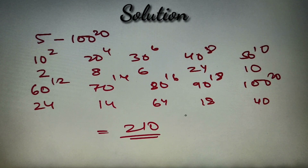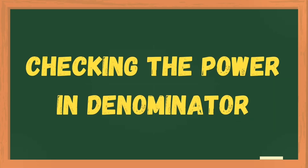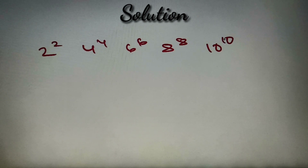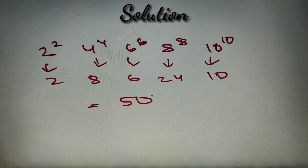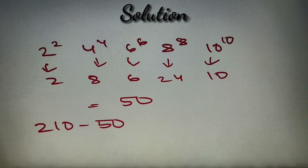Now let's calculate the highest power of 2 in the denominator and subtract to find the number of trailing zeros. The powers of 2 in the denominator come from: 2 raised to power 2, 4 raised to power 4, 6 raised to power 6, 8 raised to power 8, and 10 raised to power 10. From 2 raised to power 2 we get 2 powers of 2; from 4 raised to power 4 we get 8; from 6 raised to power 6 we get 6; from 8 raised to power 8 we get 24 (since 8 equals 2 cubed); and from 10 raised to power 10 we get 10. Summing: 2 plus 8 plus 6 plus 24 plus 10 equals 50. So the denominator has 50 powers of 2, and the numerator has 210, giving a total of 210 minus 50 equals 160 powers of 2.